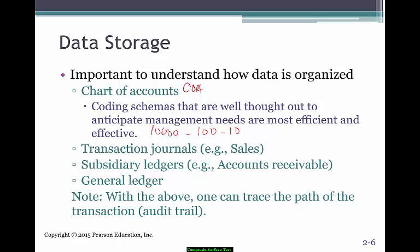Data storage can also take place in the format of transaction journals. Every time you have a sale, that's a transaction. For cash receipts, every time there's a payment on accounts receivable, you would have an accounts receivable journal. You would also have subsidiary ledgers — such as accounts receivable, accounts payable, inventory, or fixed assets. Transactions should be posted to the subledger and the general ledger at the same time so there are no discrepancies between the two.